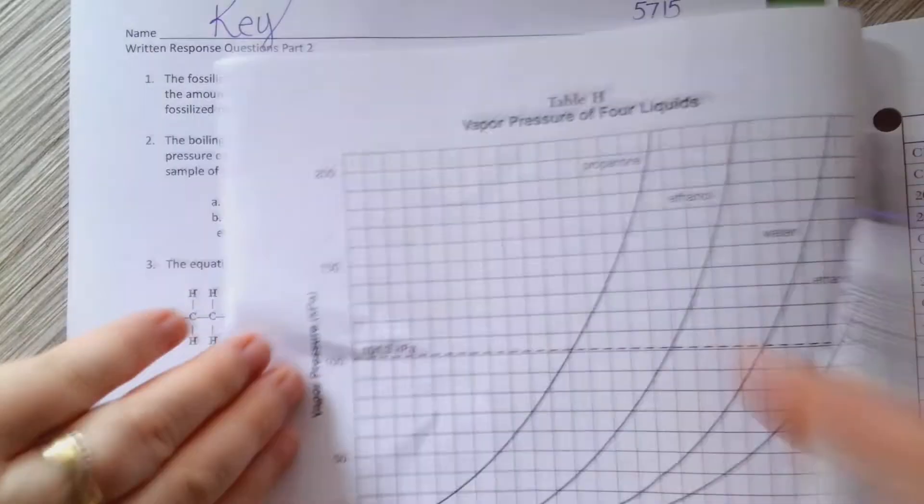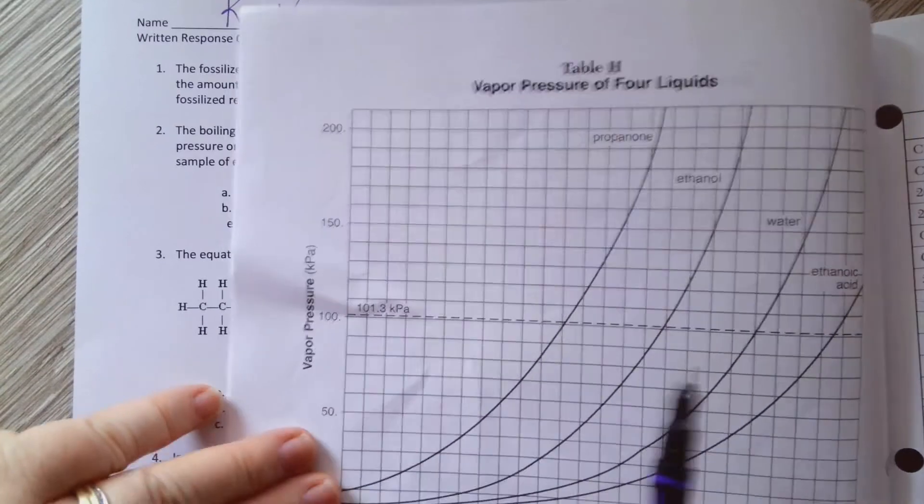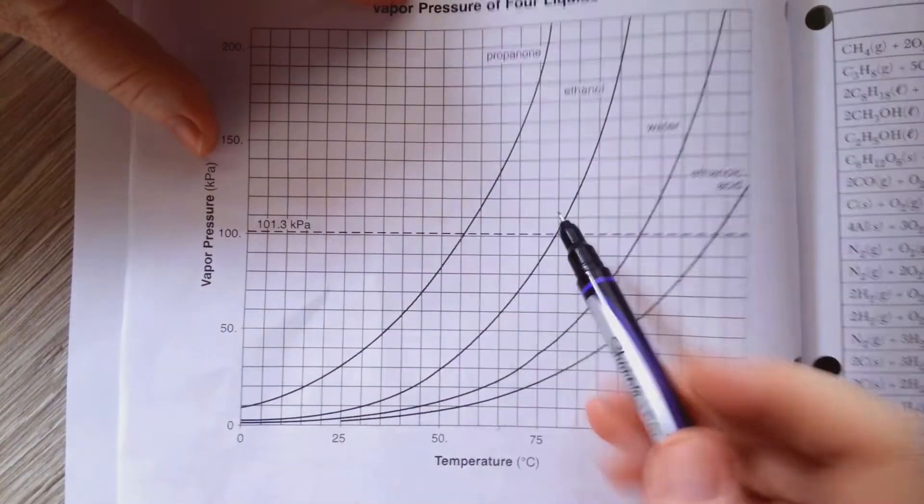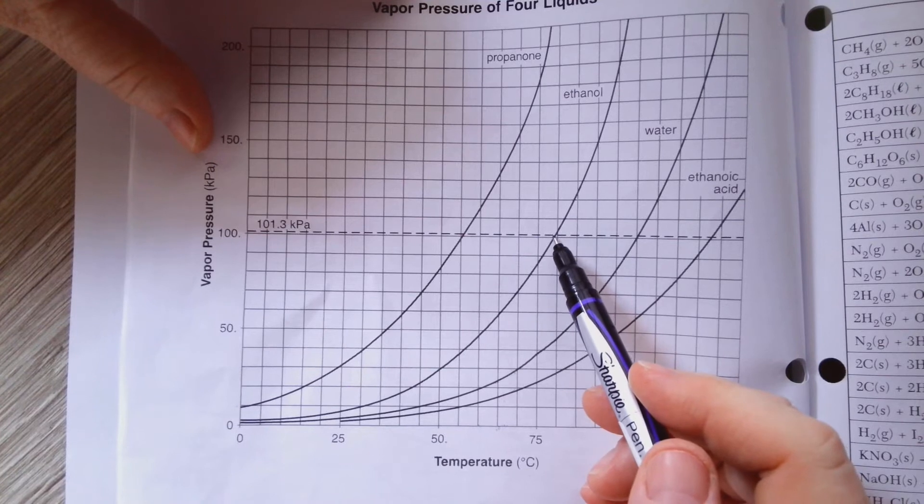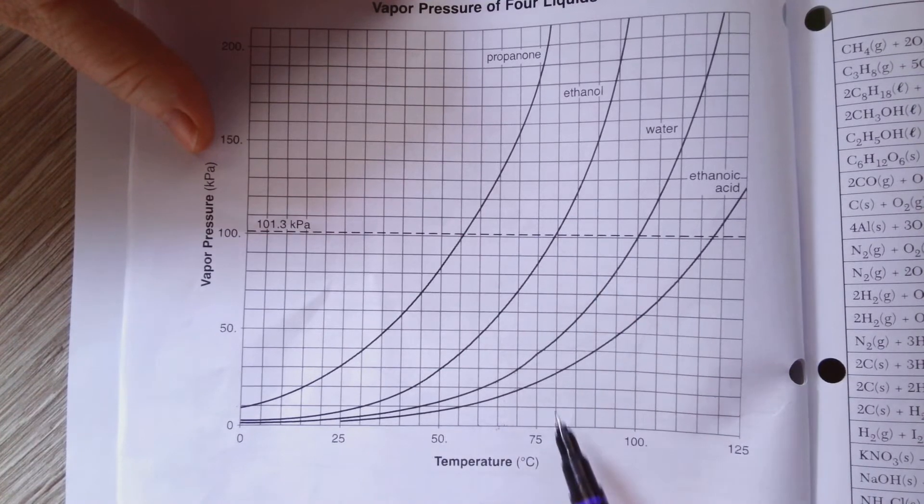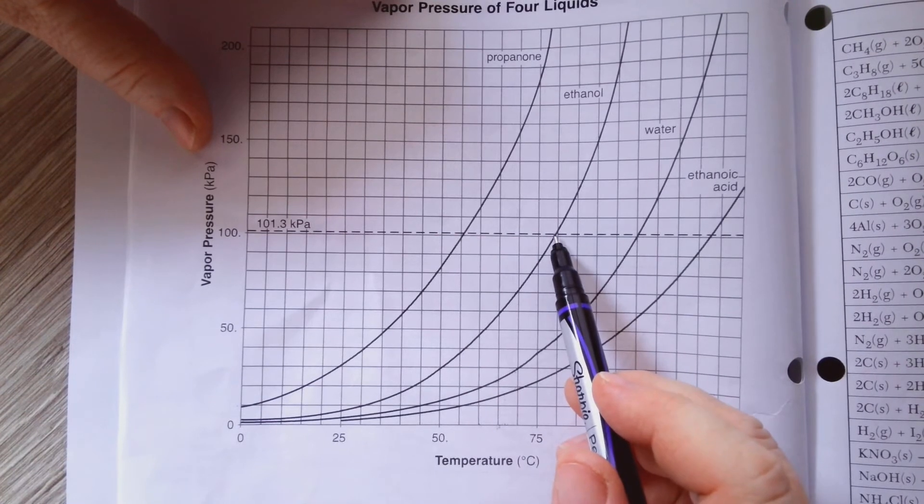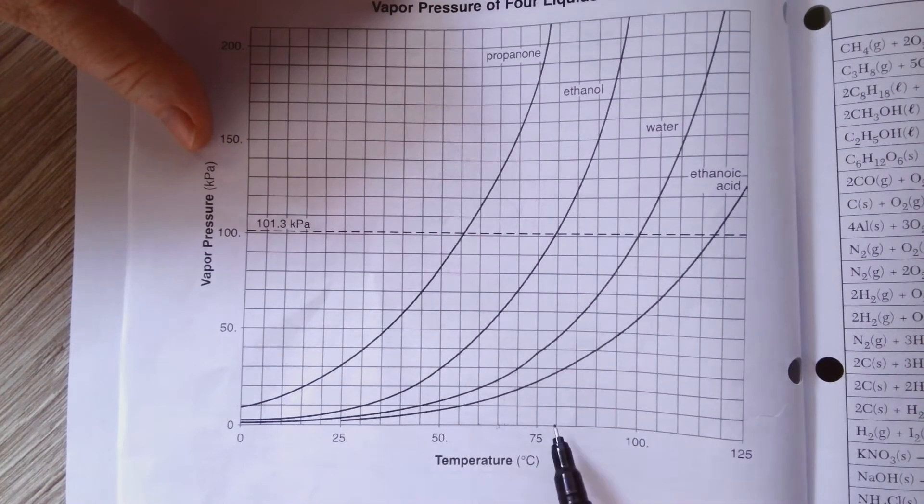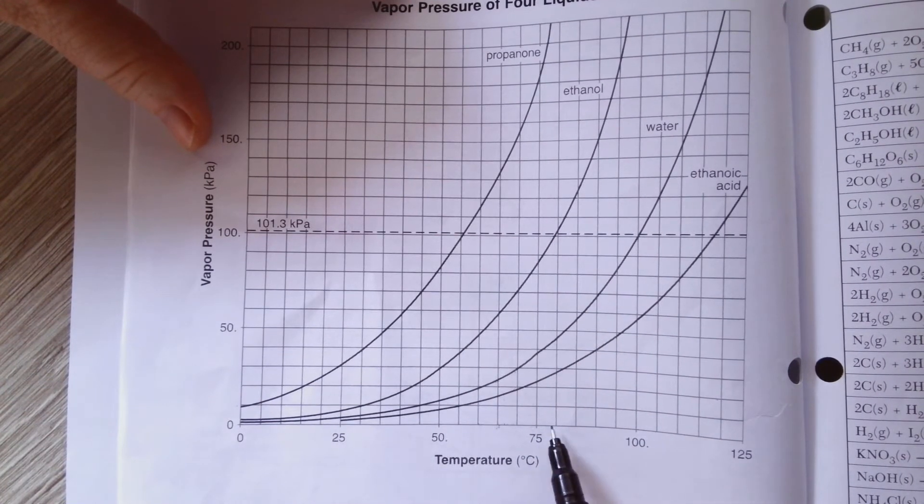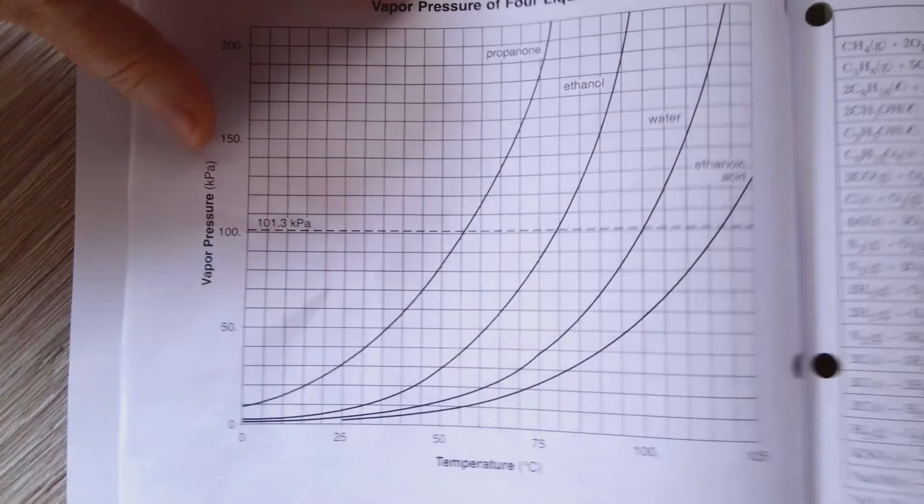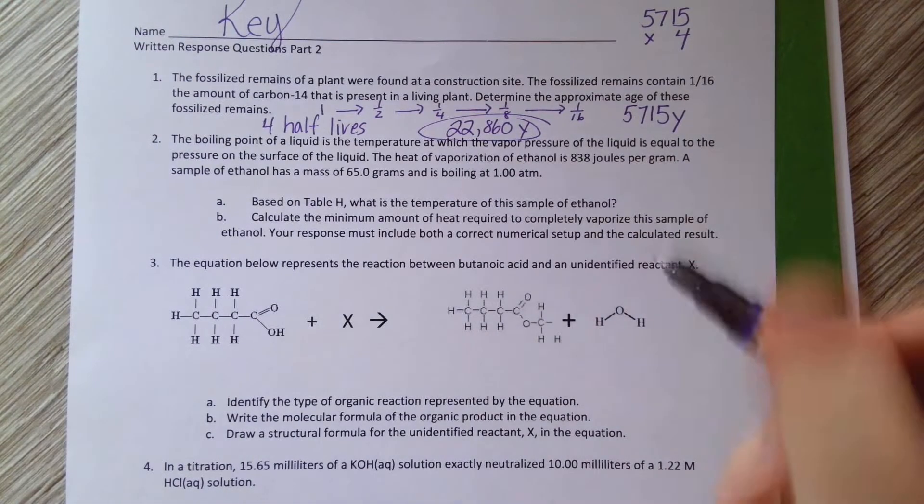A sample of ethanol has a mass of this and is boiling at one atmosphere. So I'm at one atmosphere, which is this dotted line, because see how it's labeled 101.3 kPa. But 101.3 kPa is the same as one atmosphere. So I'm going to go across until I find the line for ethanol. So go across on this dotted line until I hit ethanol. And then I need to go down. I need to read that temperature. So from where that dotted line hits, go down. So this is 75, 80, 85, 90, 95, 100. So about like 78 degrees Celsius.